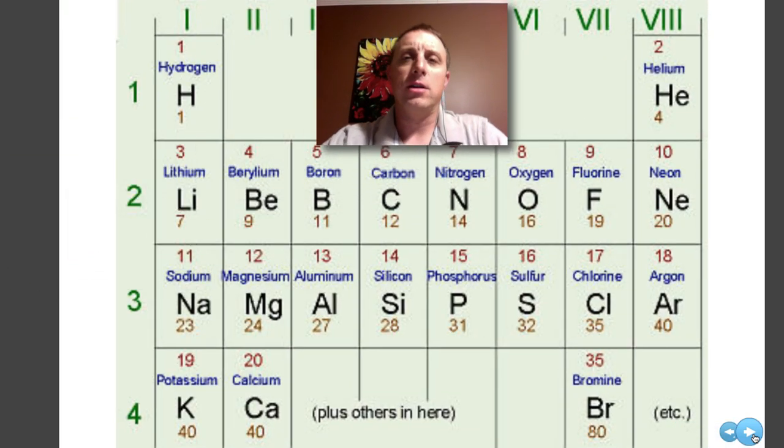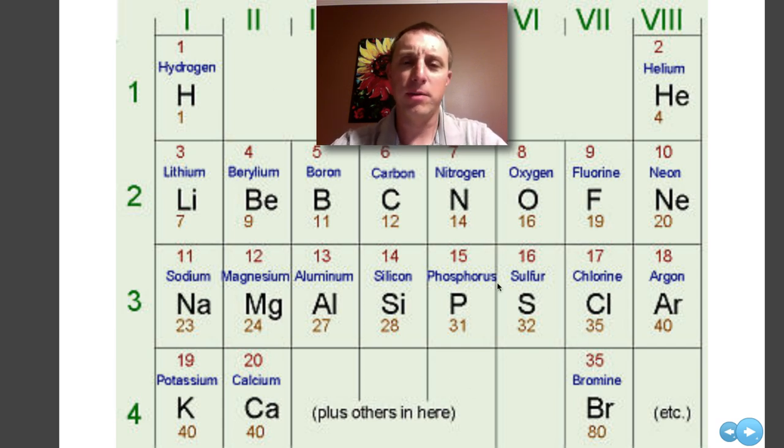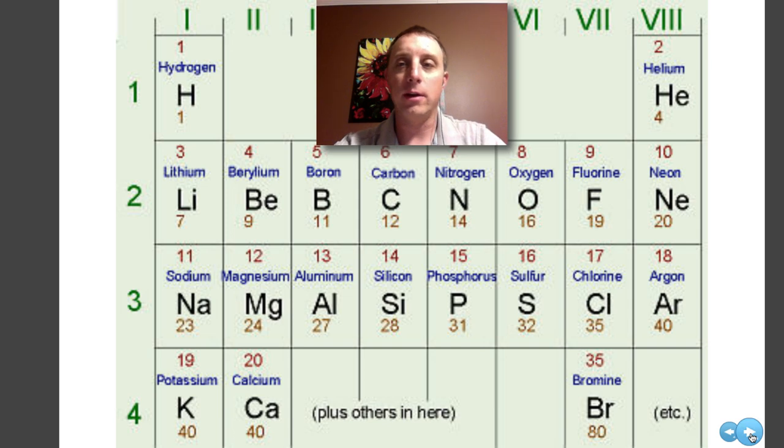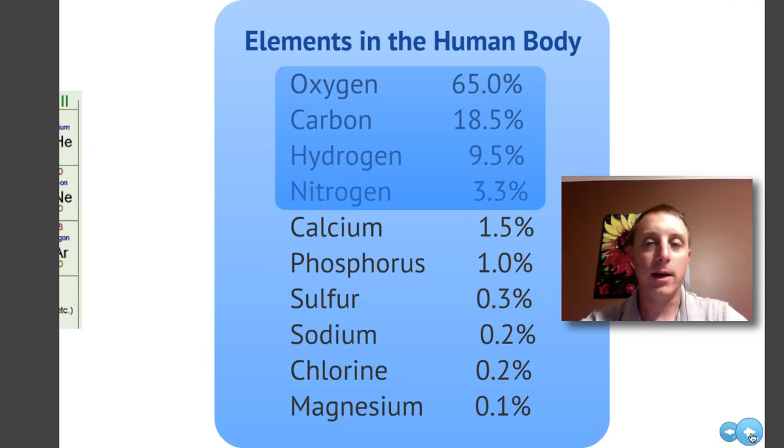When we talk about biology and the chemistry of biology, we can simplify the periodic table pretty much down to just this. We don't find all of those elements in living things. In fact, if we look very closely at the human body, we see that the big four here make up the vast majority of the mass of the human body.